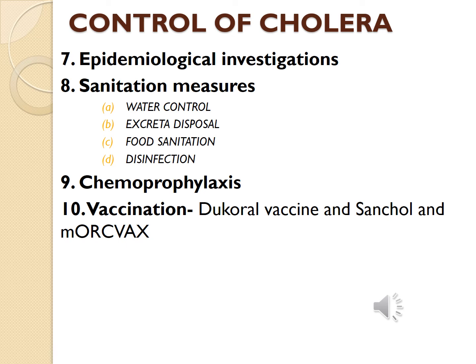Epidemiological investigations must be undertaken to define the extent of the outbreak and identify the modes of transmission so that more effective and specific control measures can be applied. Sanitation measures are very important and include water control, excreta disposal, food sanitation, and disinfection. Since water is the most important vehicle of transmission, all steps must be taken to provide properly treated water.